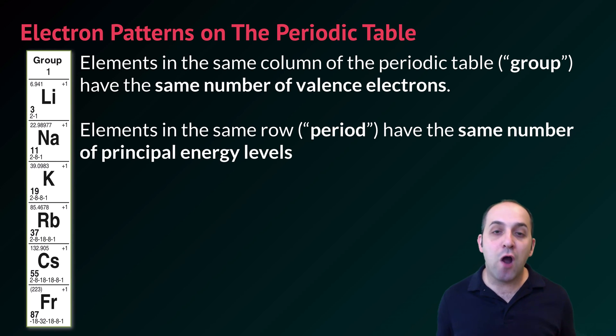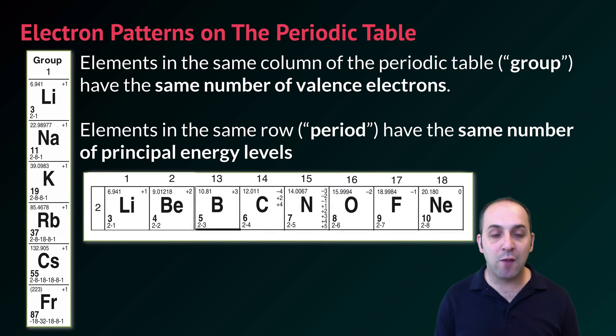Similarly elements in the same row which is called a period of the periodic table have the same number of principal energy levels. Here are all of the elements from period two. I've scrunched them together and you can see that they all have two principal energy levels in their electron configuration. These patterns are going to hold true across the periodic table and if you take a moment and look at it now I think you'll see that I'm not lying to you.